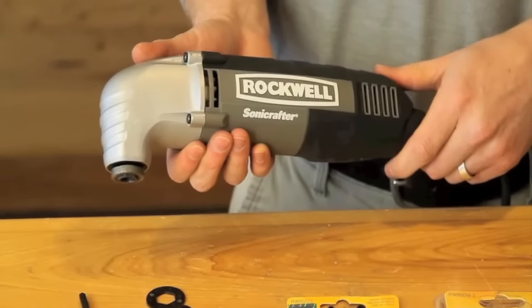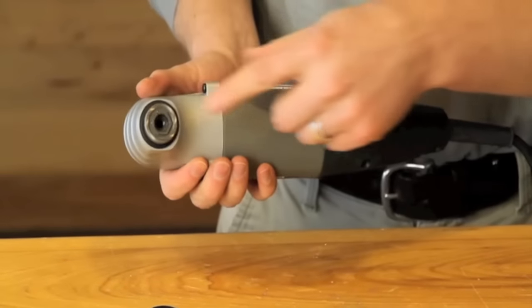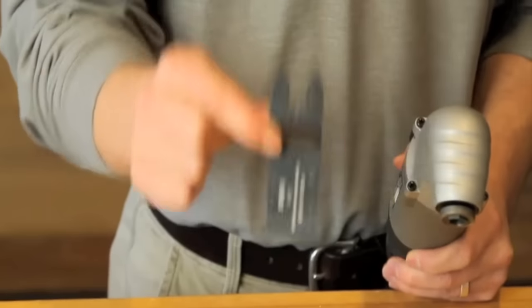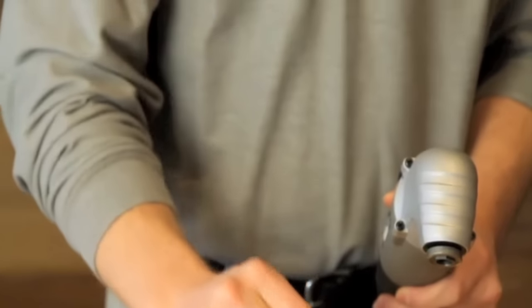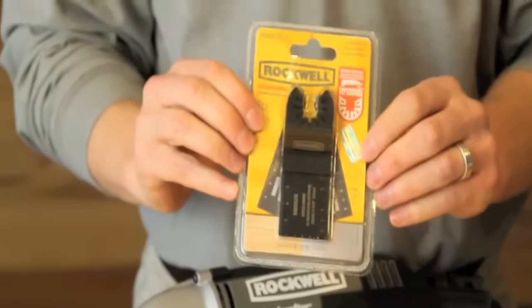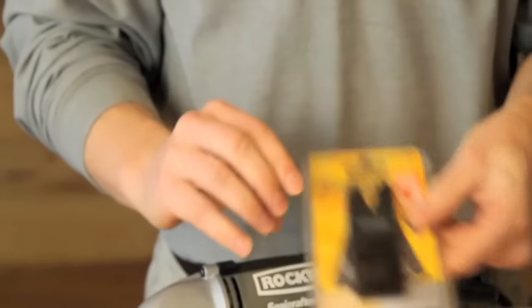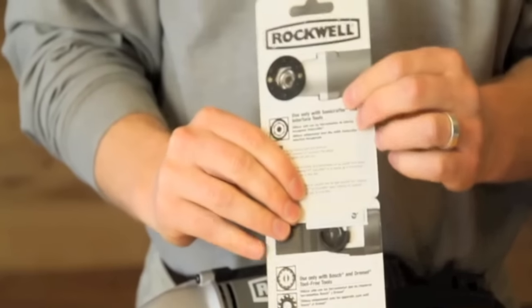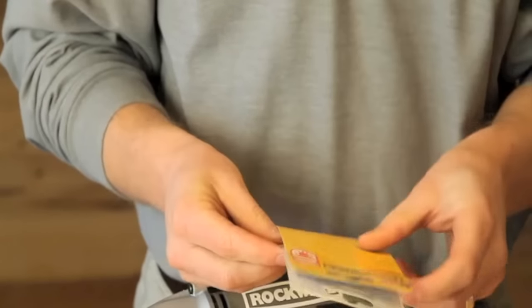Now if you're the owner of an older Rockwell Sonicrafter that has the hex interface, you'll need to use an adapter to work with the new universal fit accessories. Don't worry, that adapter is included with all the accessories you'll buy separately. Just make note that the adapter is inside the insert card, so don't throw that out when you're taking out the accessory.